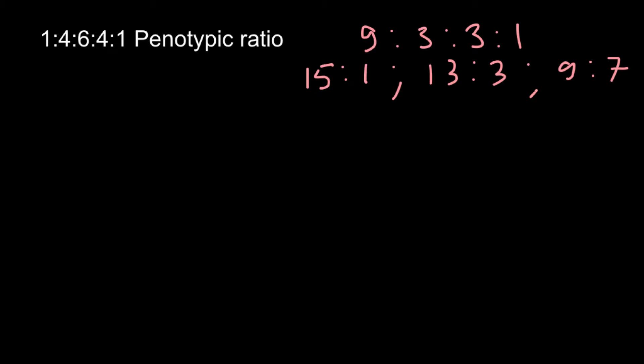In this video I'm going to talk about this unusual distribution of phenotypes. Right away I want to tell you that this is going to be a modification of the classical dihybrid cross. If you add 9+3+3+1 you get 16, and similarly 15+1, 13+3, and 1+4+6+4+1 all equal 16, which gives us a hint that two genes are involved.